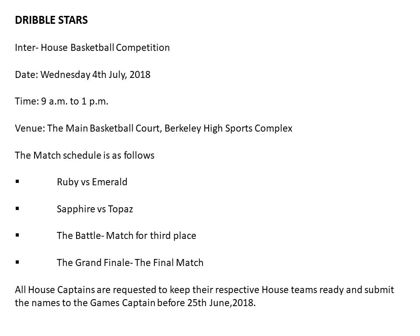Then, in Format 2, you write 'DATE:' followed by the day — Wednesday — then the date, 4th July, comma, and the year. Then 'TIME:' with a colon, 9 a.m. to 1 p.m. And 'VENUE:' — the main basketball court in Berkeley's High Sports Complex. Note that in Format 1, date, time, and venue were not mentioned in this bullet/label form.